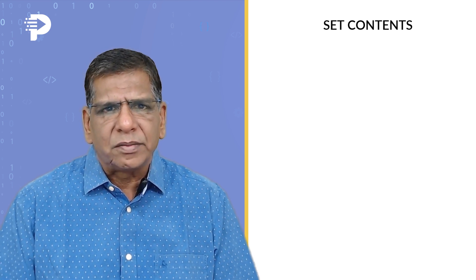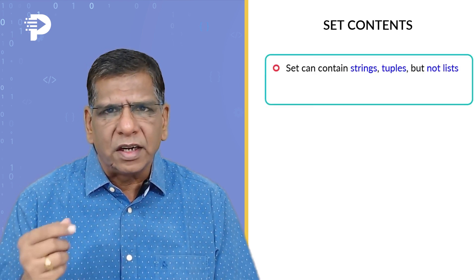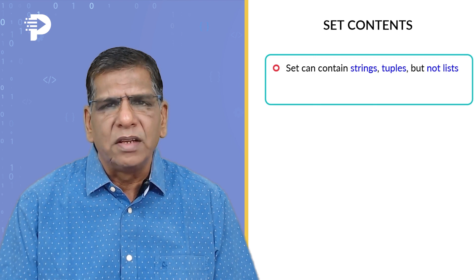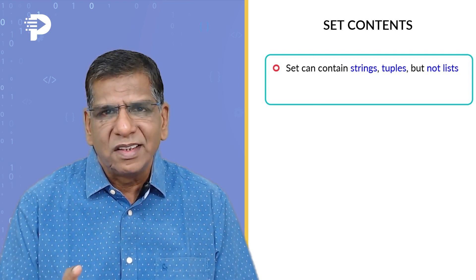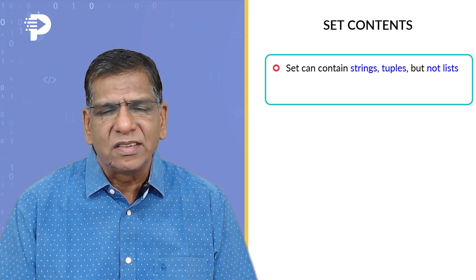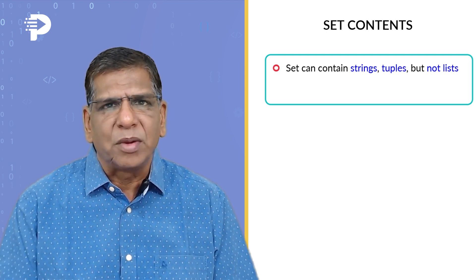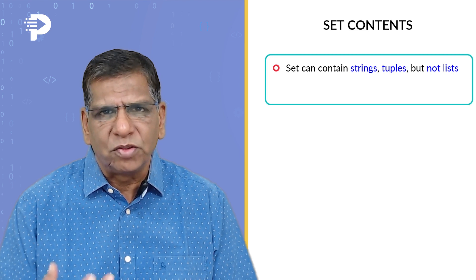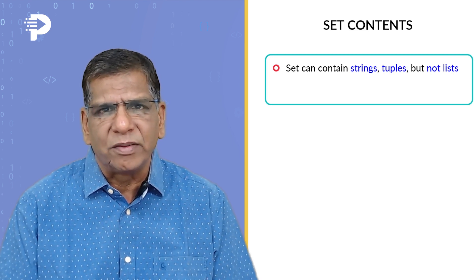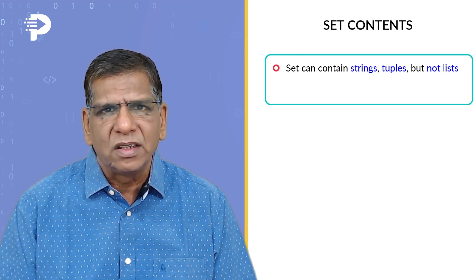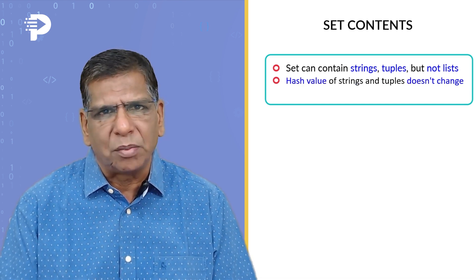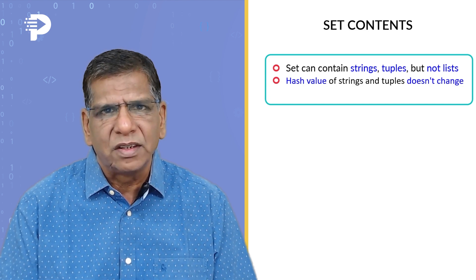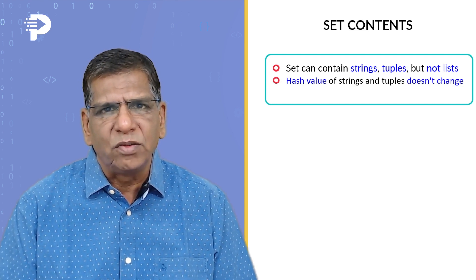Let's talk a little bit about the contents of a set. Well, it can contain strings, tuples, but never the lists. What could be the reason for this? Well, strings and tuples are immutable. Means once created, content of a string or content of a tuple is never going to change. Means its hash value would remain same. Since the tuple is fixed and the string is fixed, the hash value would be same.